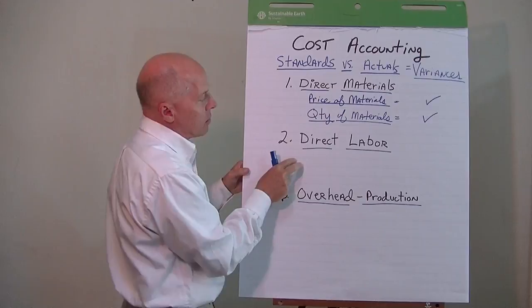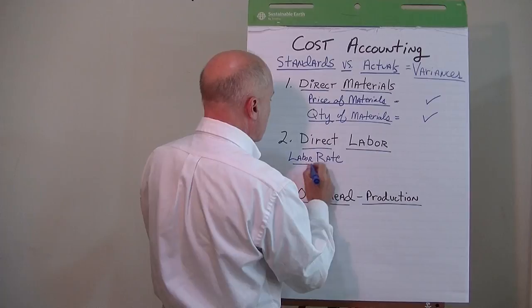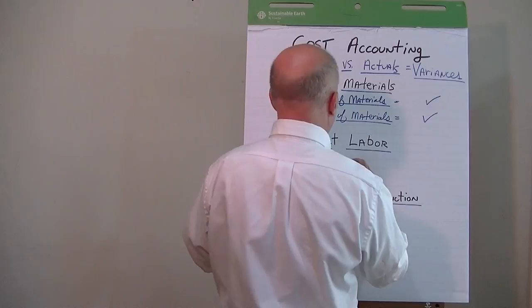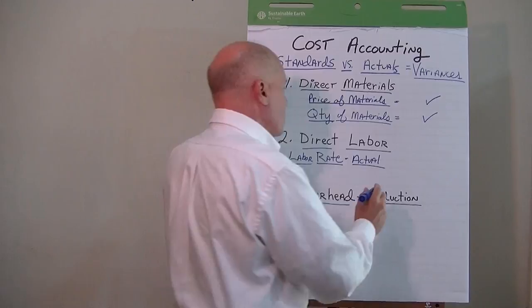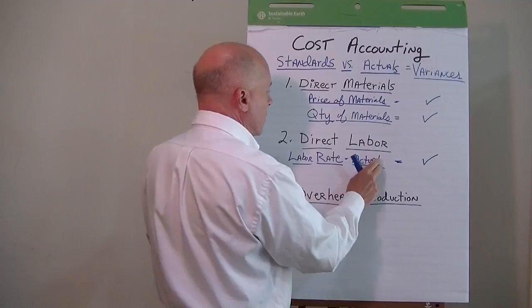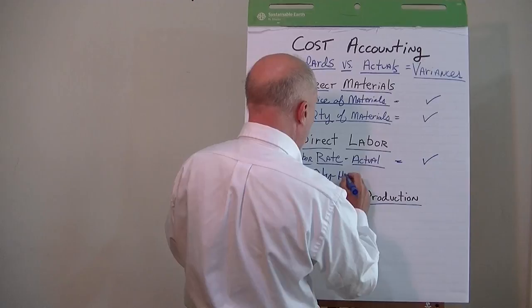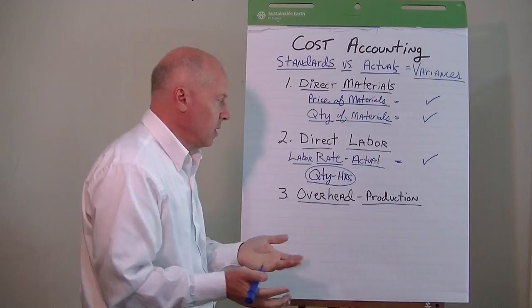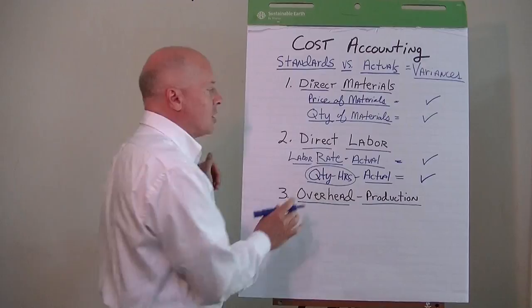Likewise, we do something similar for direct labor. We look at the rate that we pay people — the labor rate paid to people on the production floor. We know exactly what that should be, and we compare it to the actual labor rate we end up paying. For example, sometimes you have to pay time and a half because they worked overtime, which gives rise to a labor rate variance. We also measure quantity again, which is the hours worked. We know how many hours it takes to assemble a car, and we compare that to the actual hours it took to produce it — giving rise to a labor hours variance.